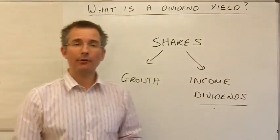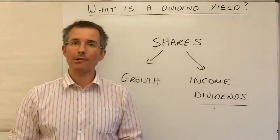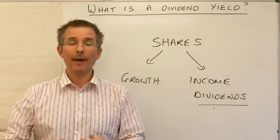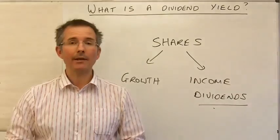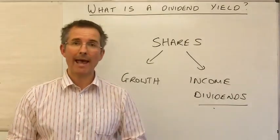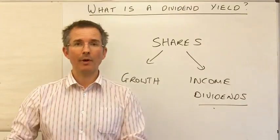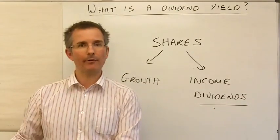Well, number one, the directors of the company decide how much they'll pay. So every year, they sit down and they look at their profits for the year and they make a decision. How much will we pay out as a dividend, as income, to our investors? And how much will we keep and try and use to grow the business?